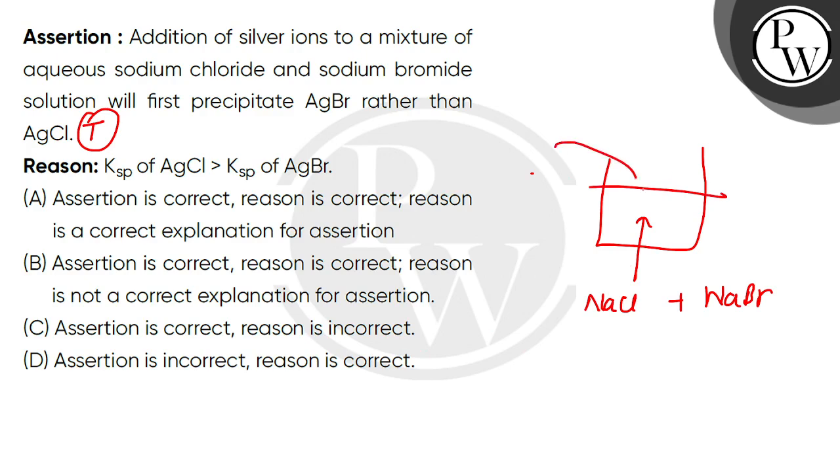Now, in this solution, what do you add? Ag plus ions. Chloride ions or halide ions, bromide, chloride, iodide, precipitate.